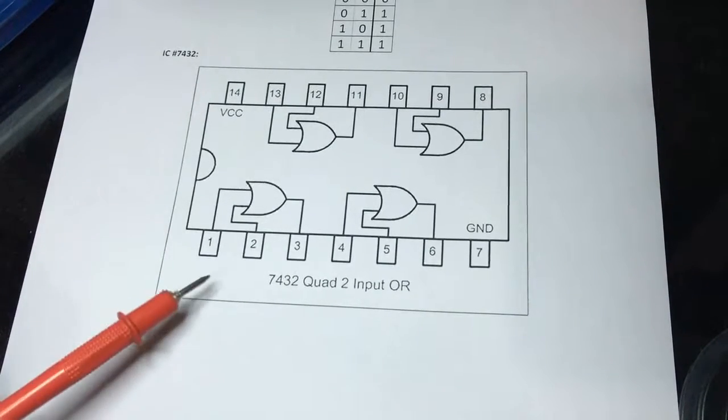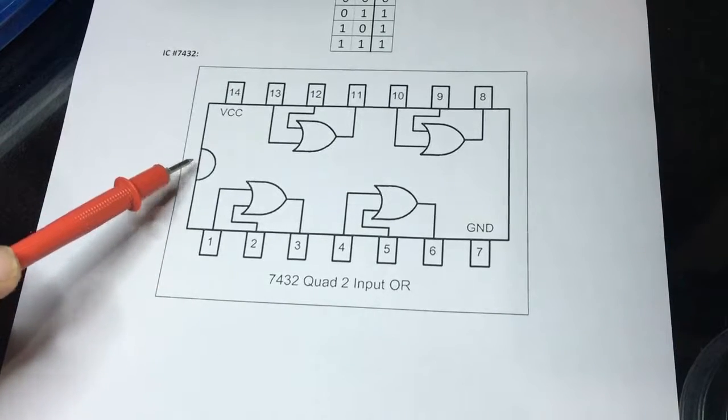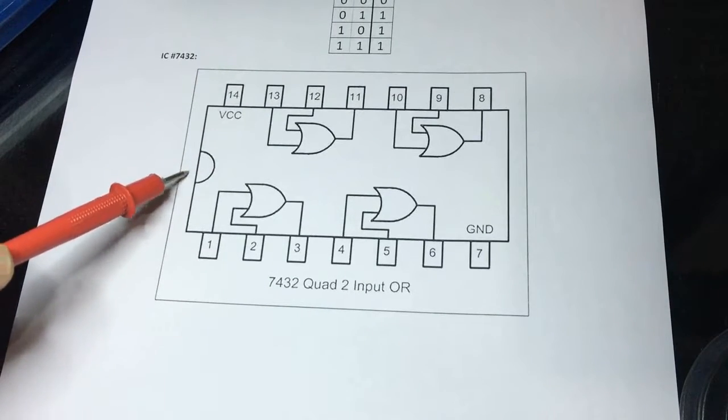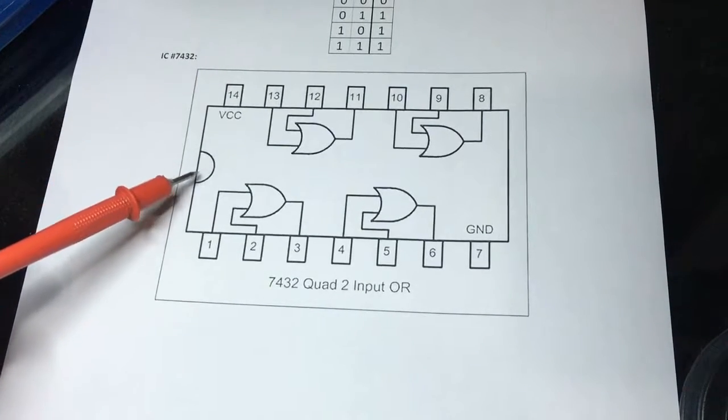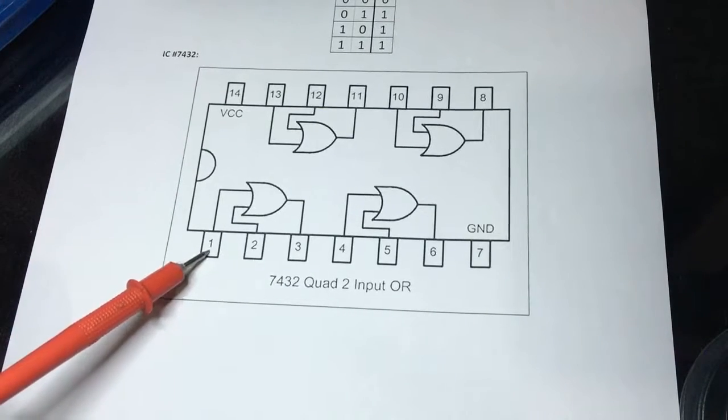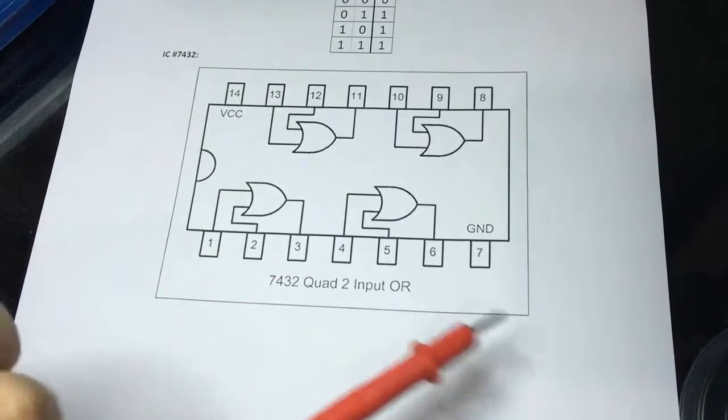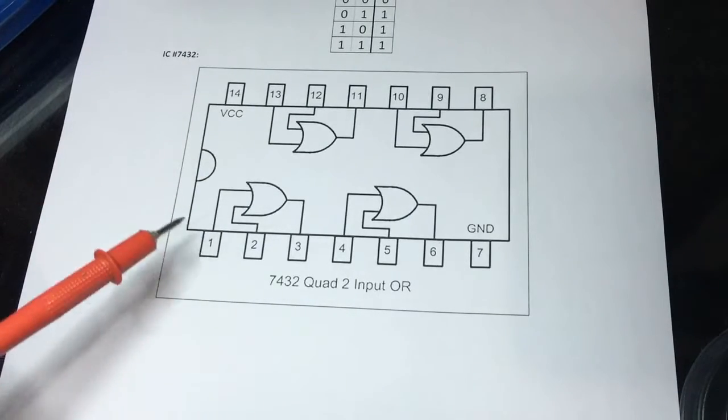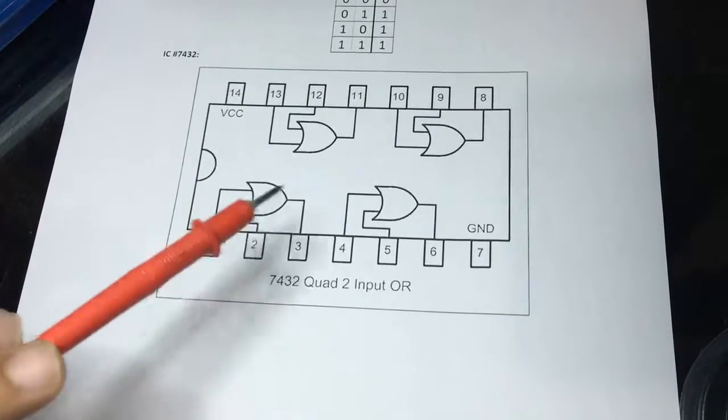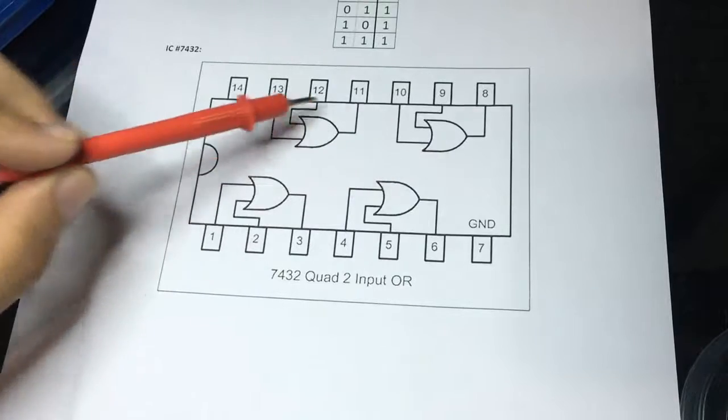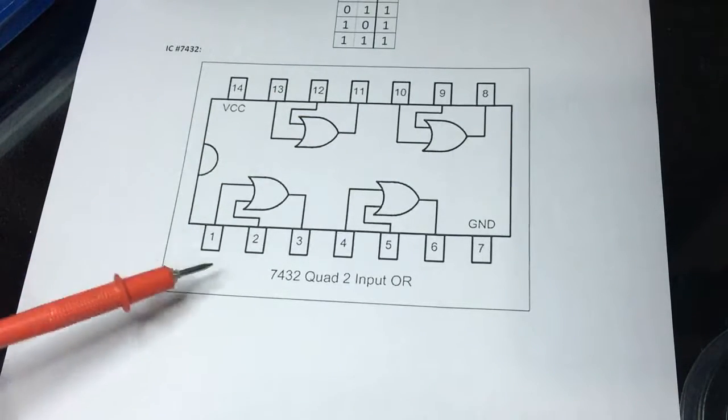And here we see that there is a small notch, as we saw on the AND gate, indicating that this is pin number one, two, three, four, etc. So this is OR gate number one, two, three, four.